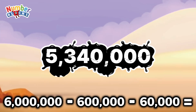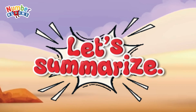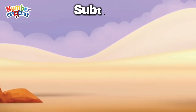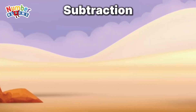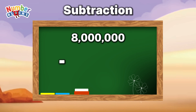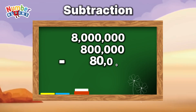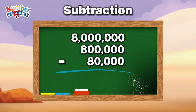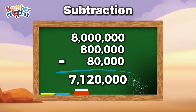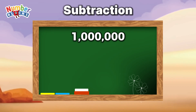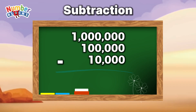Let's summarize. Let's learn subtraction. 8,000,000 minus 800,000 minus 80,000 is equals 7,120,000. 1,000,000 minus 100,000 minus 10,000 is equals 890,000.